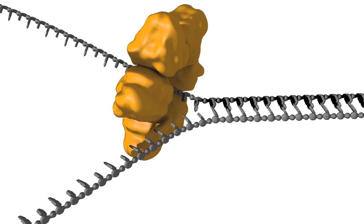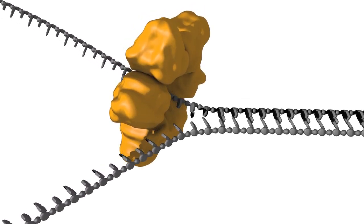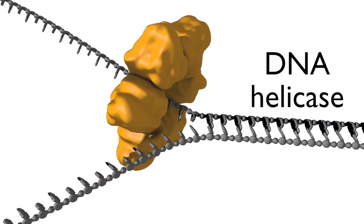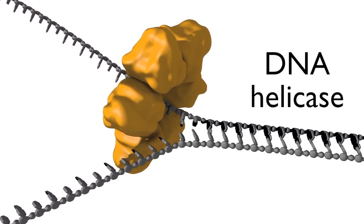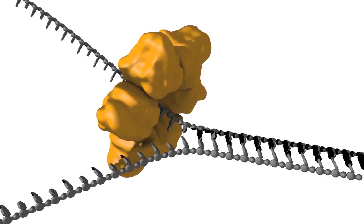To expose the single-stranded DNA at the replication fork, a six-membered ring-shaped complex called DNA helicase first separates the parental DNA strands. This separation gives the DNA polymerases the access they need to allow copying.